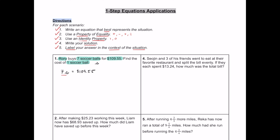To solve this, we're going to use the division property of equality. What's 7s divided by 7? That's just going to be 1s. So one soccer ball is equal to $109.55 divided by seven, which is $15.65. When we drop that one in front, that's using the identity property of multiplication. Our conclusion: one soccer ball costs $15.65.